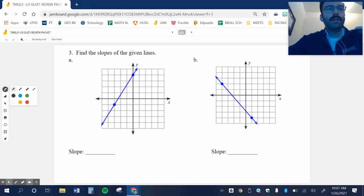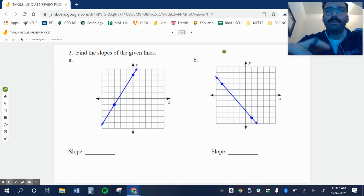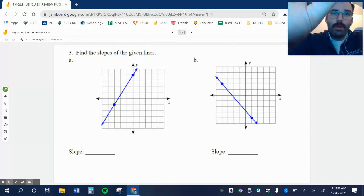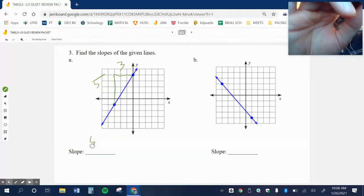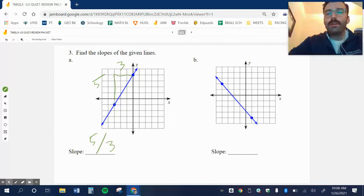Alright, let's start with number 3. I want to find the slope of the given lines. So here it looks like it's an upward slope, which means that my slope should be positive. So I'm going up and then over. I go up 1, 2, 3, 4, 5, and over 1, 2, 3. So my slope is 5 over 3.